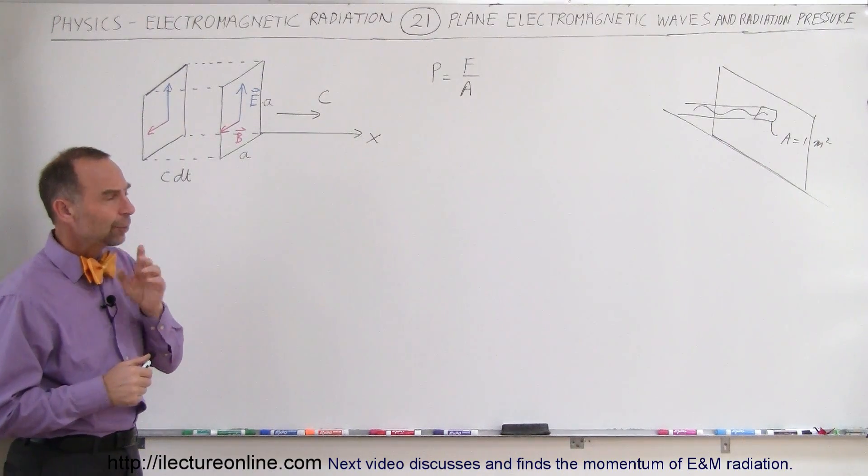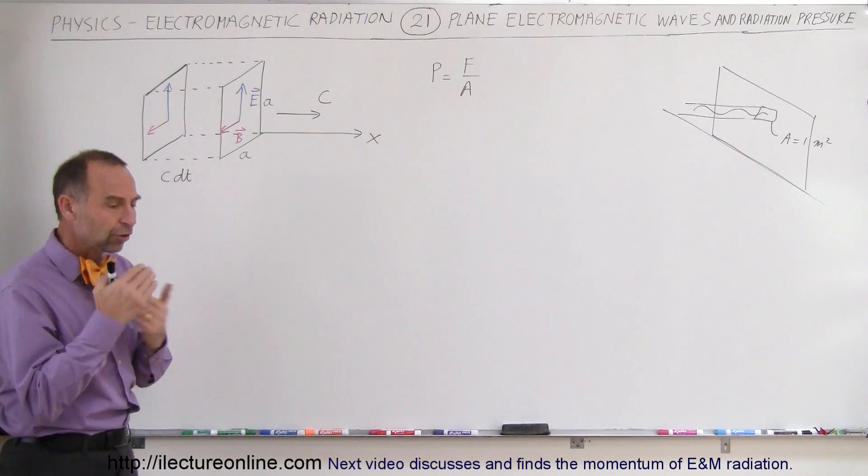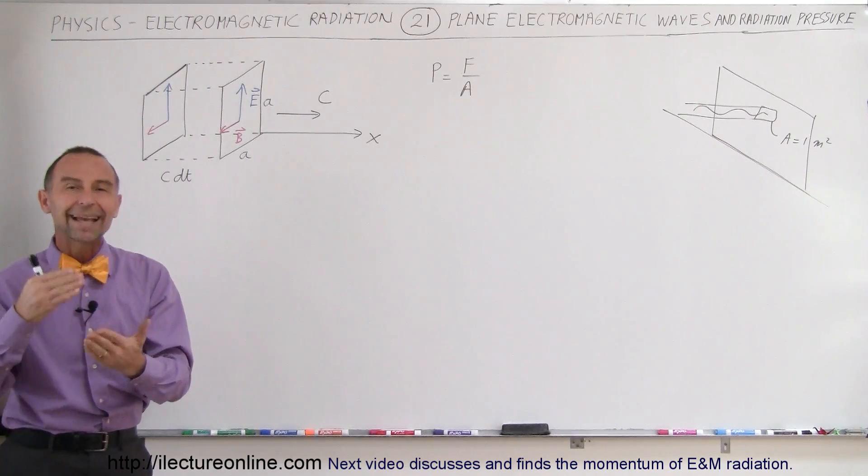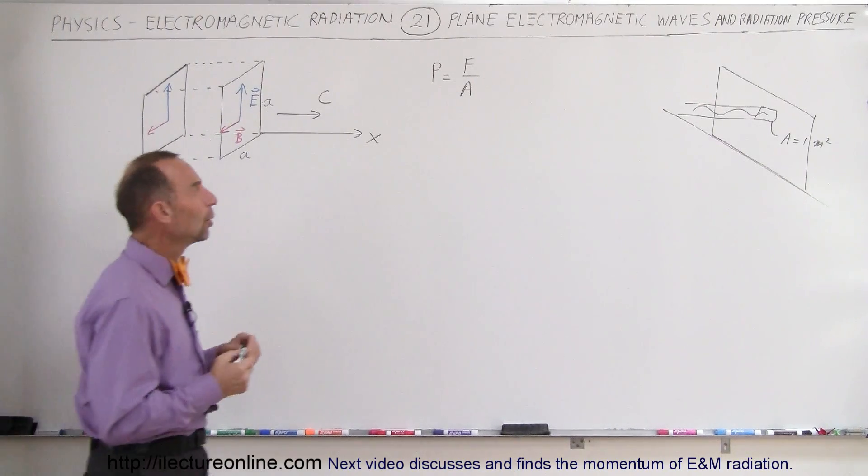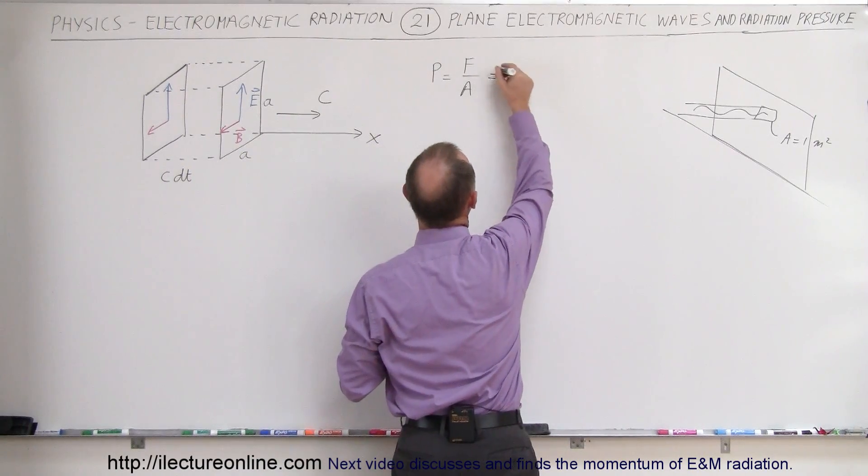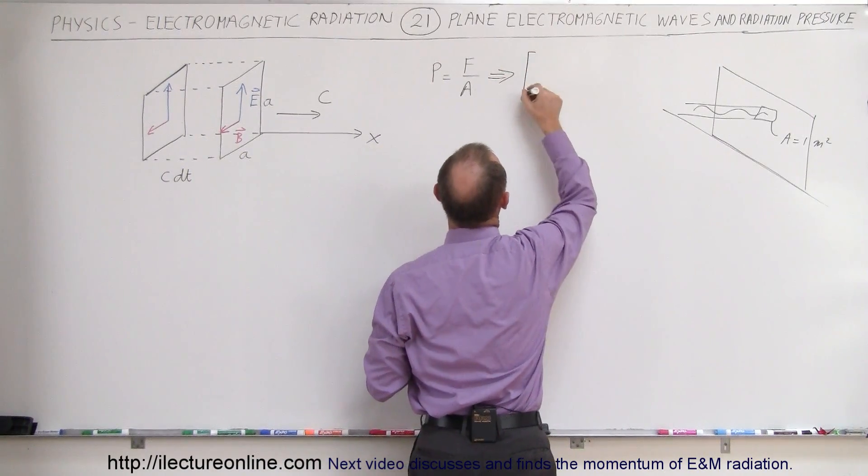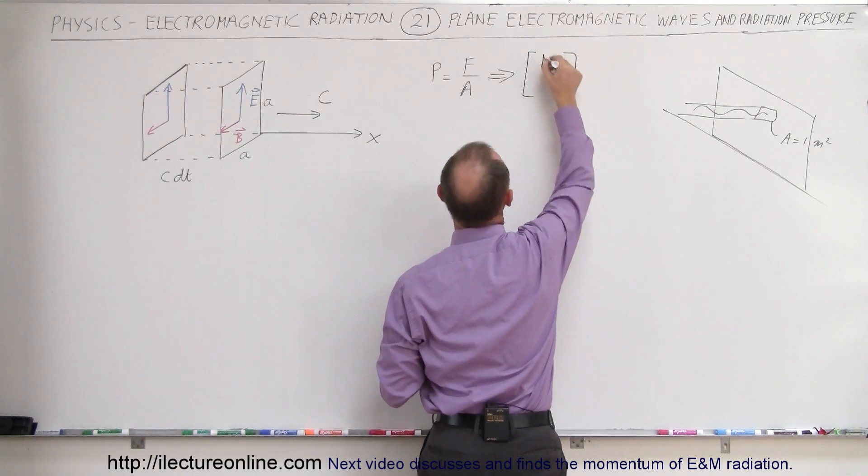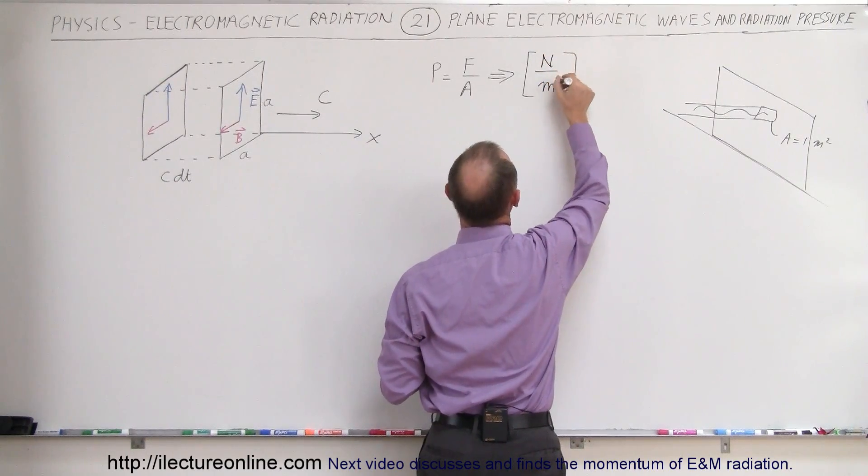We can actually do it in a very clever way. We can find an association between pressure and intensity of the light. What are the units for pressure? The units for pressure is force divided by area, and the units then would be newtons divided by meters squared.